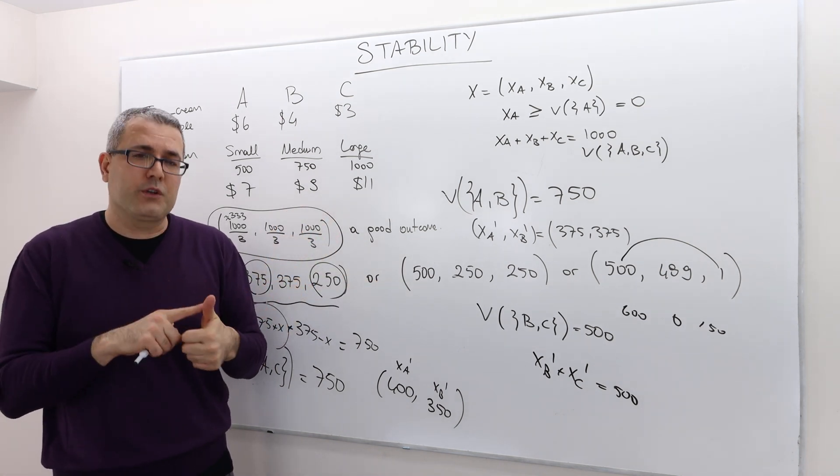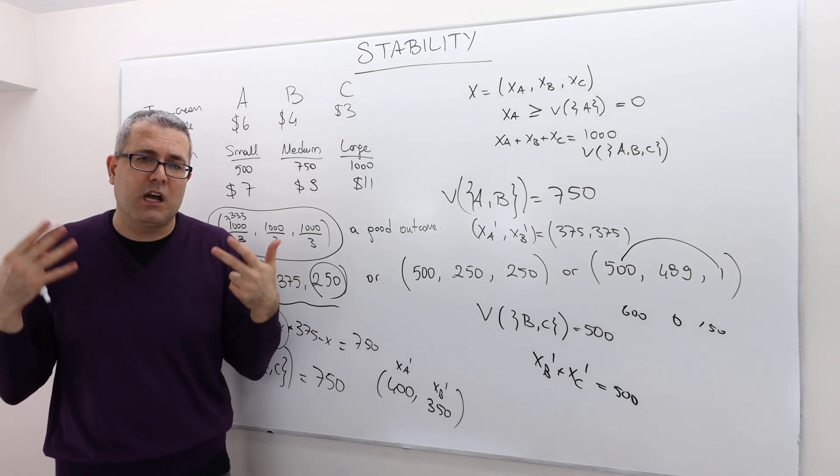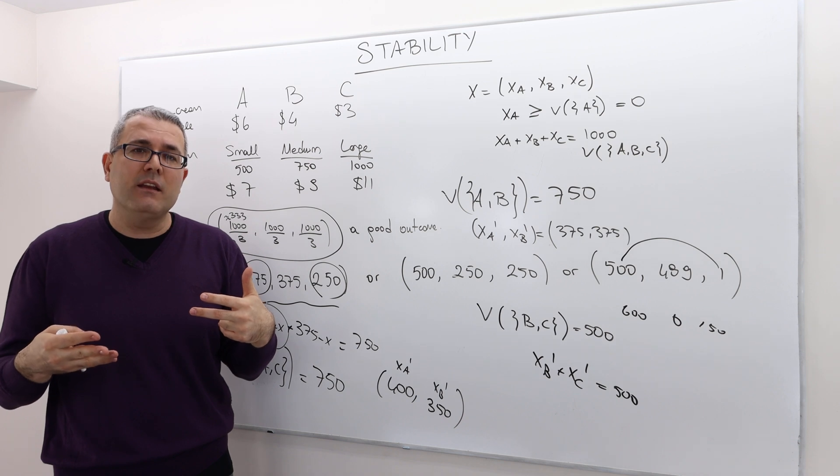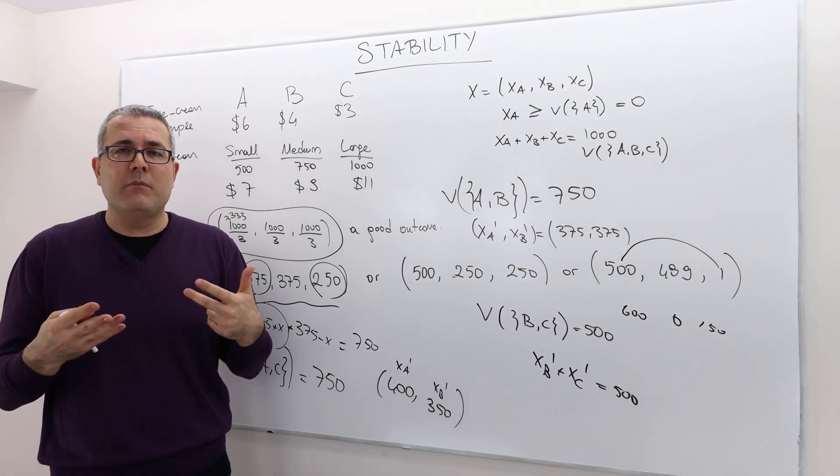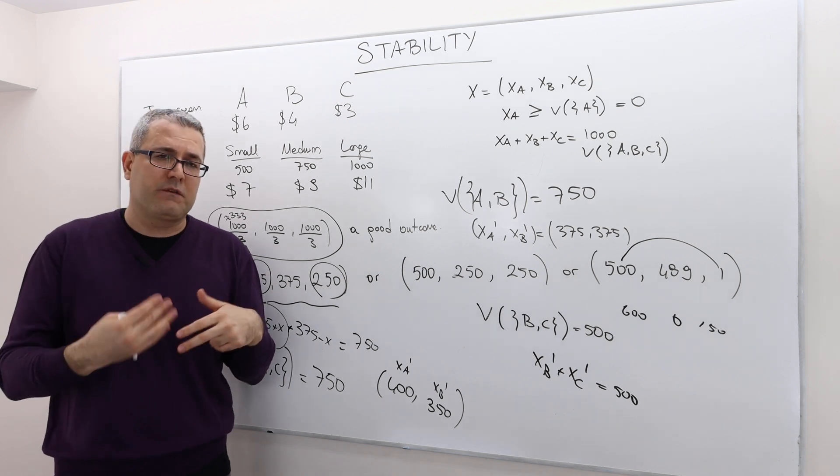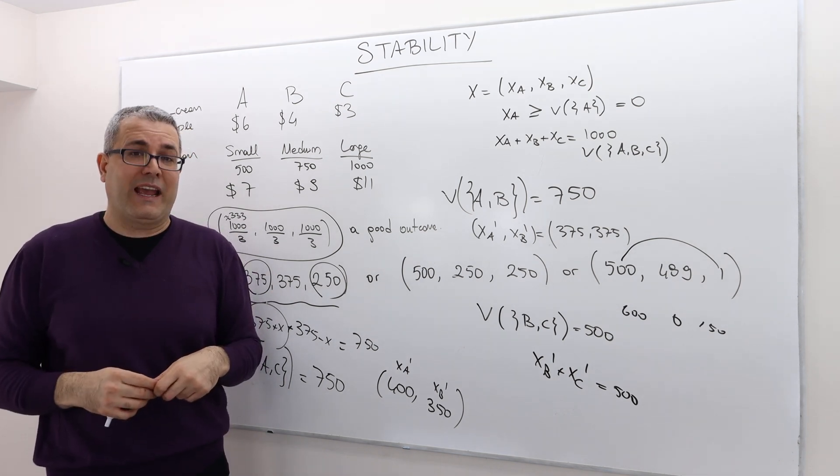So what we should do first is generalize this concept and formalize this concept of stability. And then maybe we should bring other nice properties like fairness, for example. So this is exactly what we're going to do next.